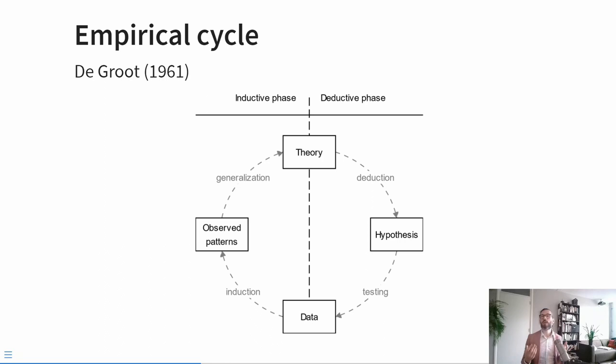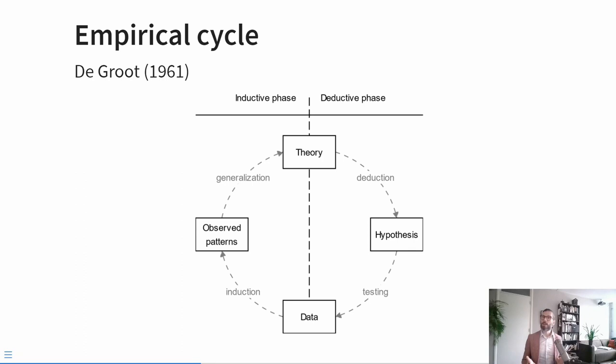From that theory, you deduce specific hypotheses — testable propositions. Next, you collect a sample of data and use those data to put the hypothesis to the test. Your data may be either congruent with the hypothesis or incongruent with it. Based on that result, you may reflect further. If the hypothesis was not supported, maybe the theory was wrong and needs amending. Or you might observe interesting patterns in your data and induce a more general rule, generalizing by amending your theory. Ideally, this yields ever-improving theoretical models in your field of research.